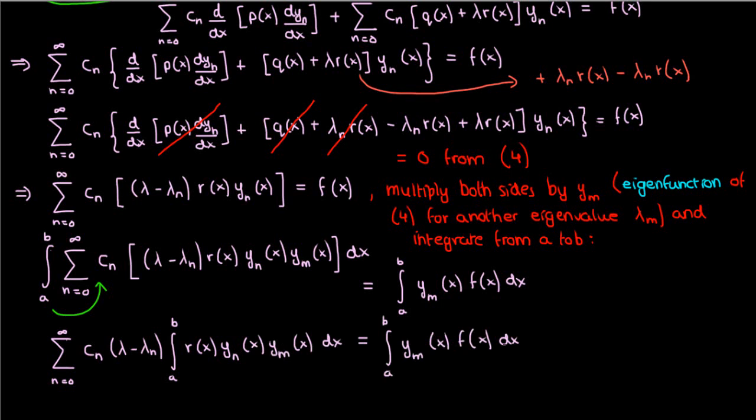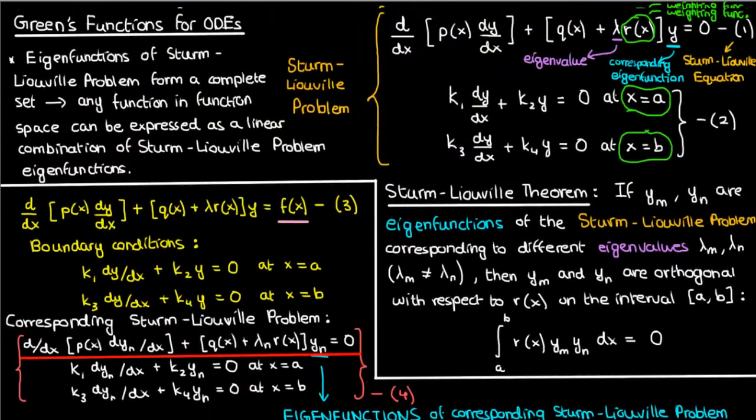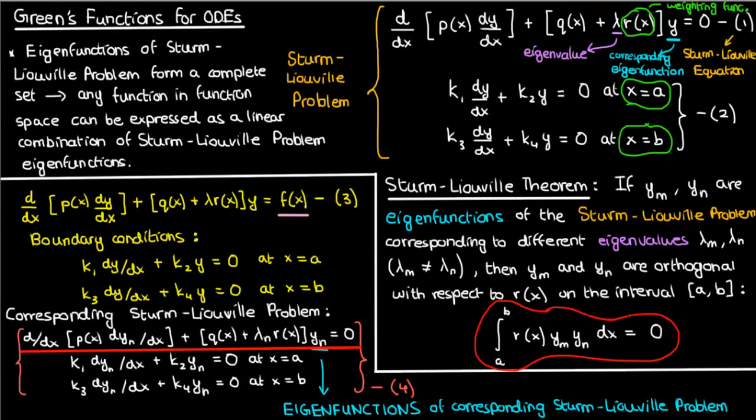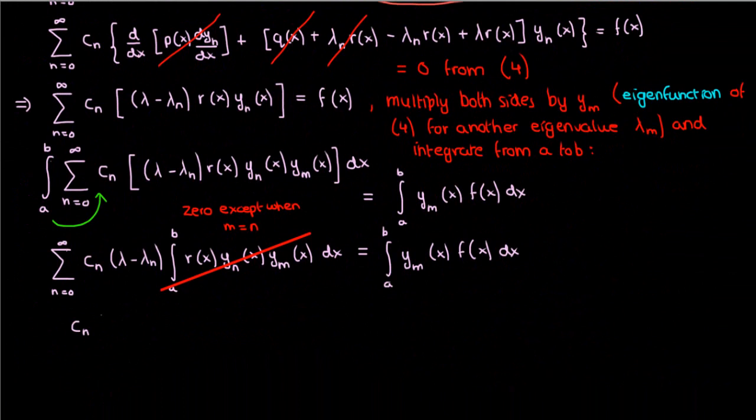This integral on the left here is always 0, except when m and n are equal to each other. Why? Because of the orthogonality relation from the Sturm-Liouville theorem. So everything on the left is 0, except when m equals n, which means that this is what we'll end up with.